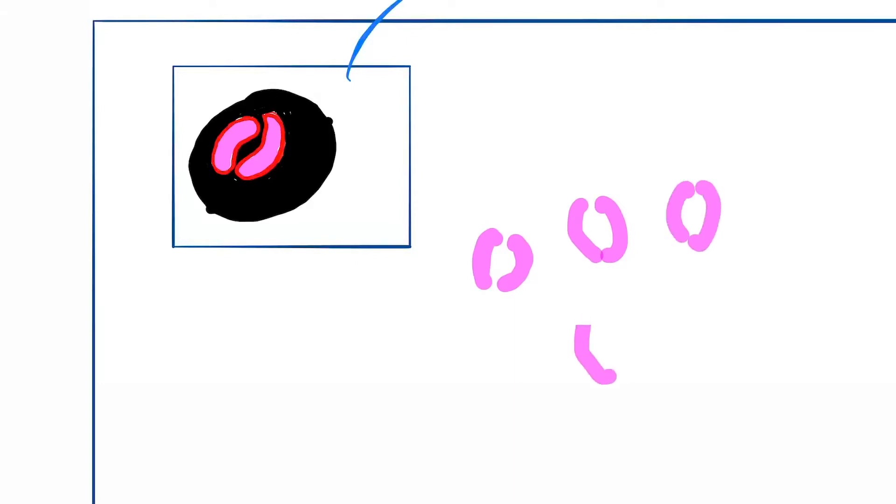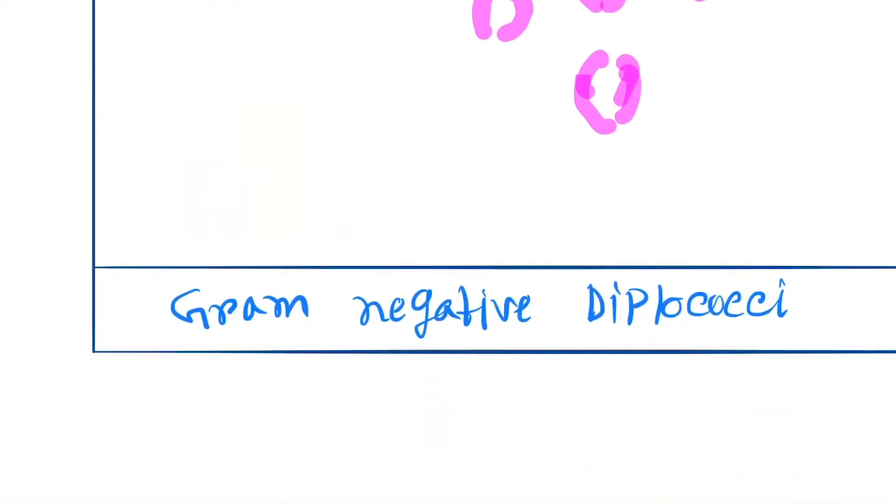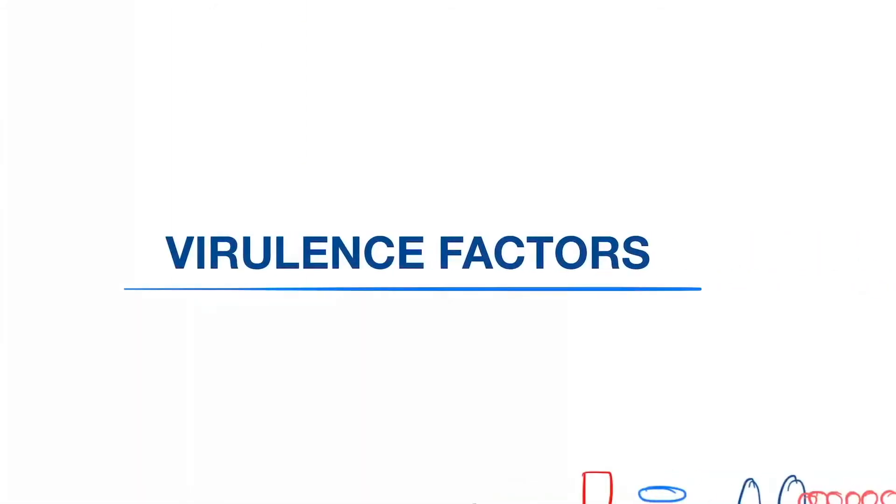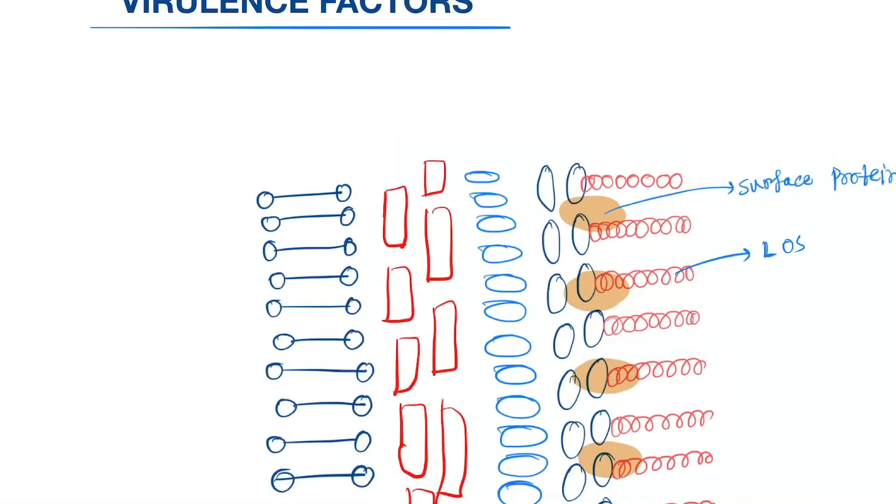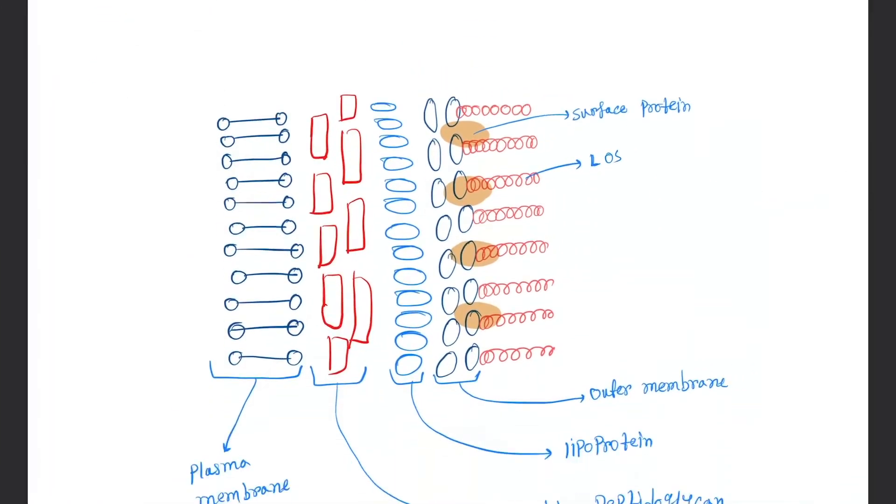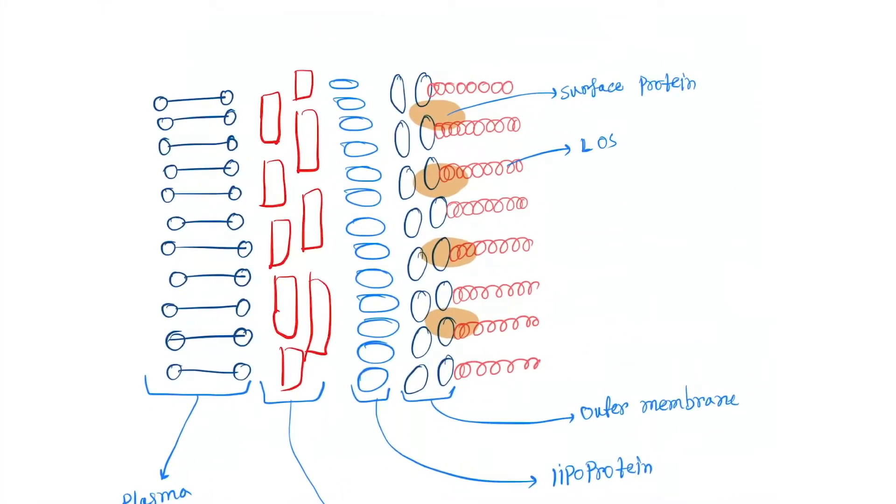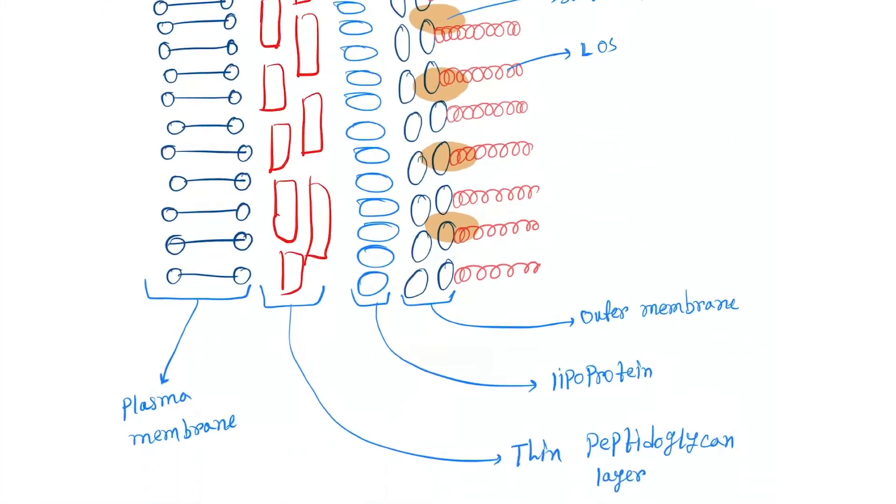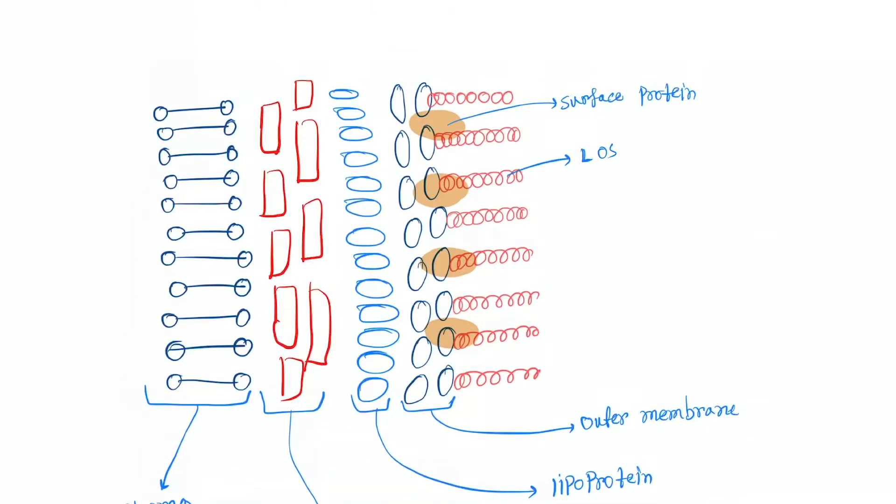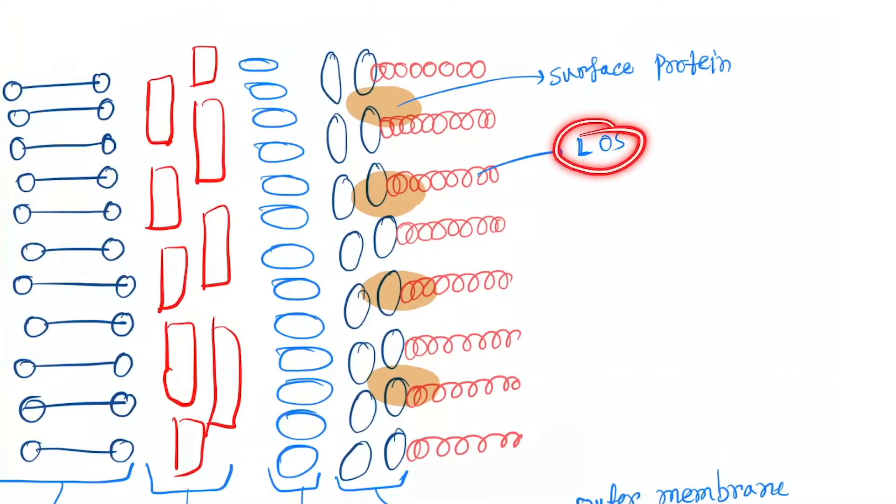Gram-negative diplococci. Now come to the virulence factors. Virulence factors are almost the same as Neisseria meningitidis. Let's see the structure. This is the plasma membrane. You can see thin peptidoglycan layer, lipoprotein, outer membrane with surface proteins, and this is LOS.